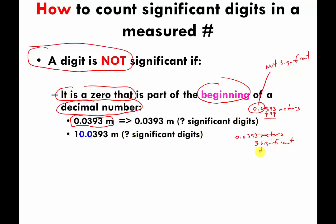A slight variation: if the measurement is 10.0393 meters, those zeros no longer come at the front of the number — the 1 is now at the front. So this measurement, 10.0393, has six significant digits. The zeros in the middle are now sandwiched between significant digits and are themselves significant.